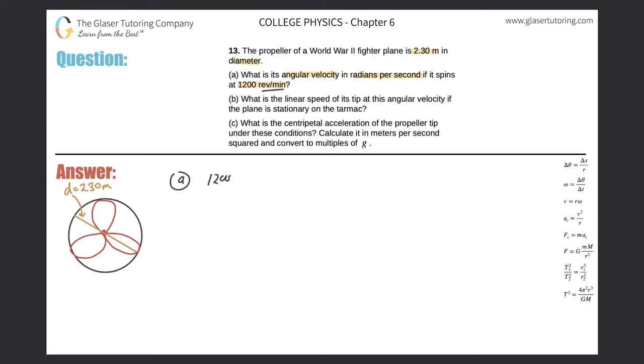This is 1200 revolutions per minute, and I have to convert it into radians per second. I need to get rid of the revolution, so they go on the bottom. Revolutions at the bottom, then I'm thinking, do I know a relationship to radians? I do - 2π radians for every one revolution. You have to memorize that.